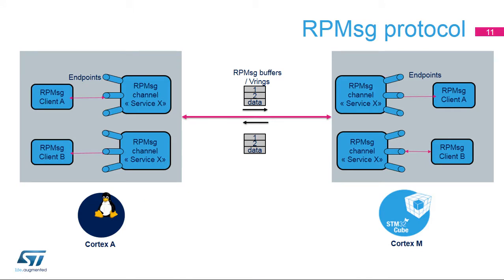In the STM32-MPU embedded software distribution, the RPMSG protocol is used for the inter-processor communication. The RPMSG protocol consists of sending a message from a local address to a remote address. The message is stored in a buffer in the shared memory. The VIRT-IO layer is in charge of the management of the buffer lifecycle using ring buffers with associated descriptors named V-rings. On each Cortex, an RPMSG client offers a service. The client is identified by its service, defined by a service name, or its endpoint, defined by an address identifier and operating callbacks.